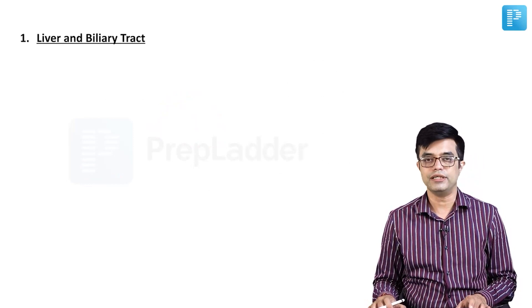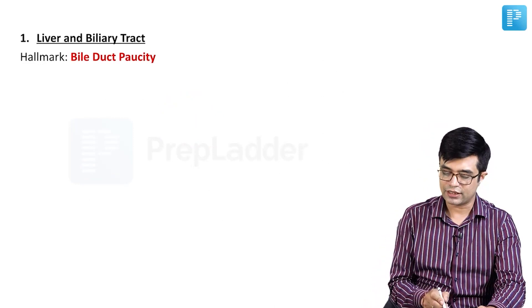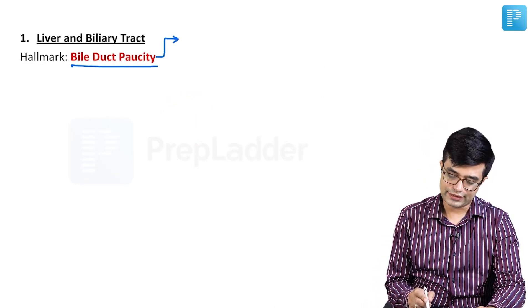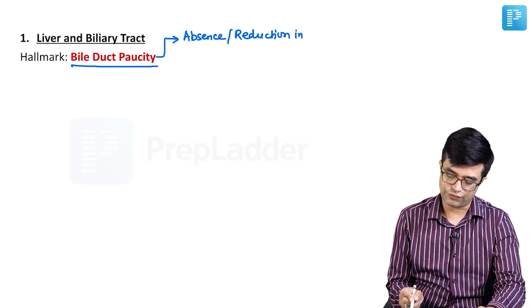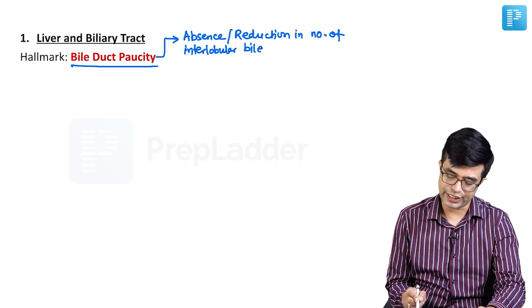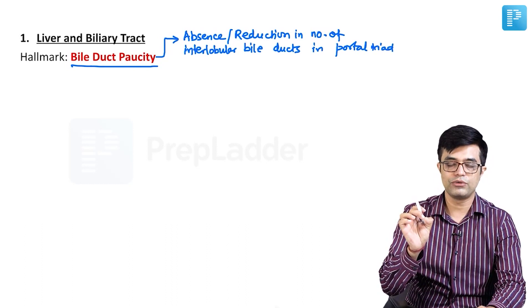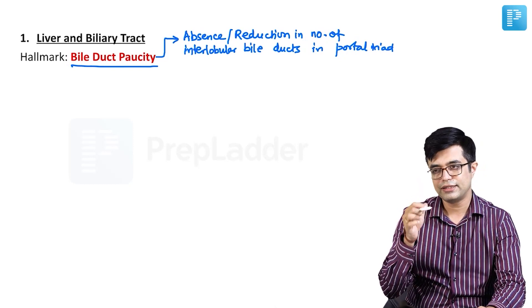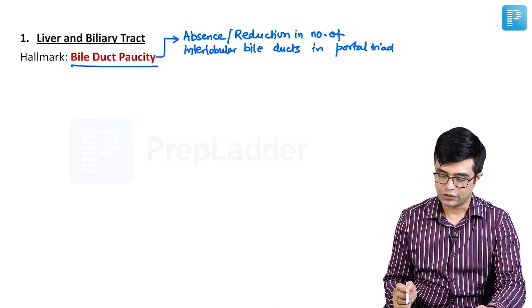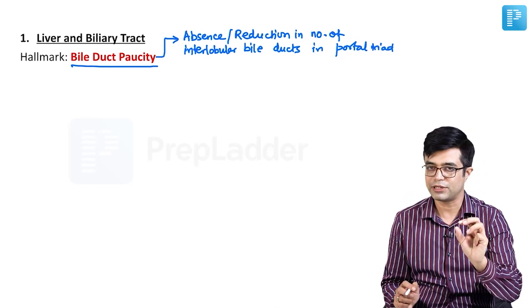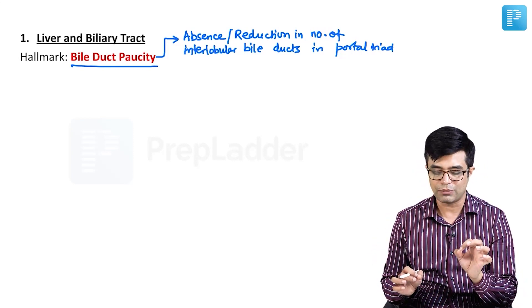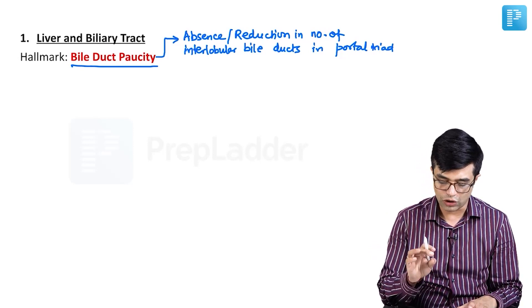Let us go system-wise. The most important system, which determines the outcome, is the liver and biliary tract. The hallmark of this condition is bile duct paucity. In these patients, there is absence or reduction in the number of interlobular bile ducts within the portal triads. The portal triad normally contains an artery, portal vein, and interlobular bile duct. The other two will be normally present, but interlobular bile ducts will be absent. That is the hallmark finding on histology.